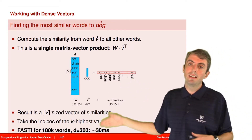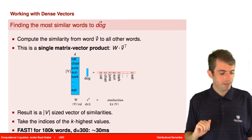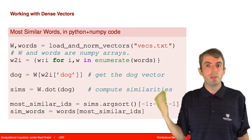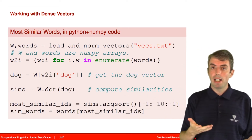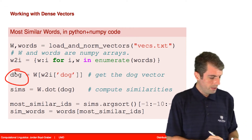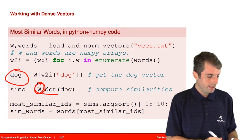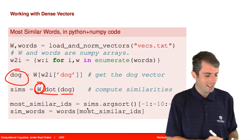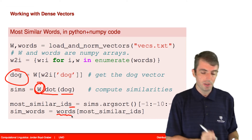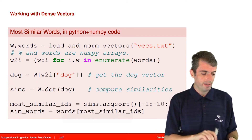You want to compute those similarities explicitly and find the things with the highest values, taking advantage of optimizations people have developed over decades for linear algebra operations. Here is some Python code using the NumPy library to do just that: get the dog vector out, compute the dot product with the entire embedding matrix, get the indices of the words with the highest similarity, and retrieve the identities of those words. This gives you a very fast computation of the most similar words.